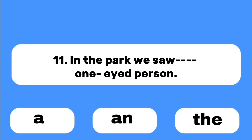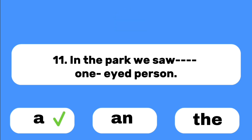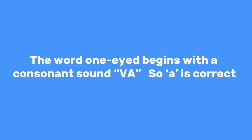Number eleven: In the park, we saw ___ one-eyed person. The word 'one-eyed' begins with the consonant sound 'wa,' so 'a' is correct: a one-eyed person.